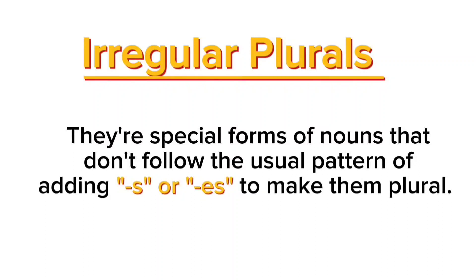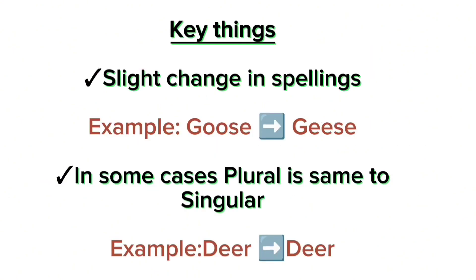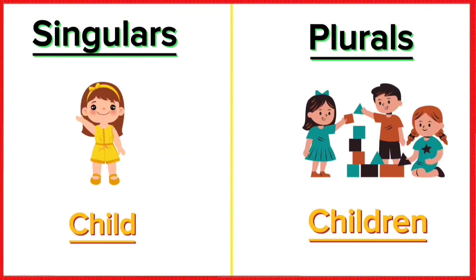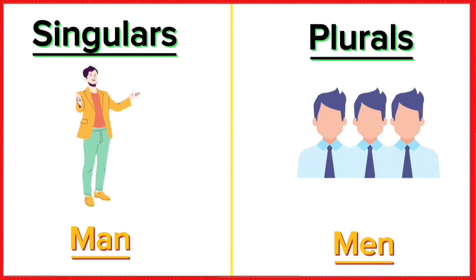Hello everyone, welcome back to my channel. In this video we are going to be learning the irregular plurals. What are these? They are special forms of nouns that don't follow the usual pattern of adding S or ES to make them plural. I'm not going to teach any kind of rules in this video, but the key things to remember about irregular plurals are: there is a slight change in the spellings of the words, and in some cases plural is same as the singular. Examples: child-children, man-men.